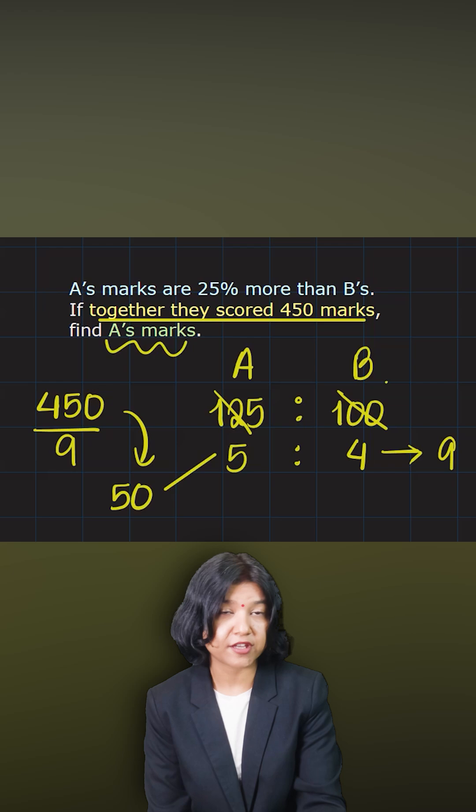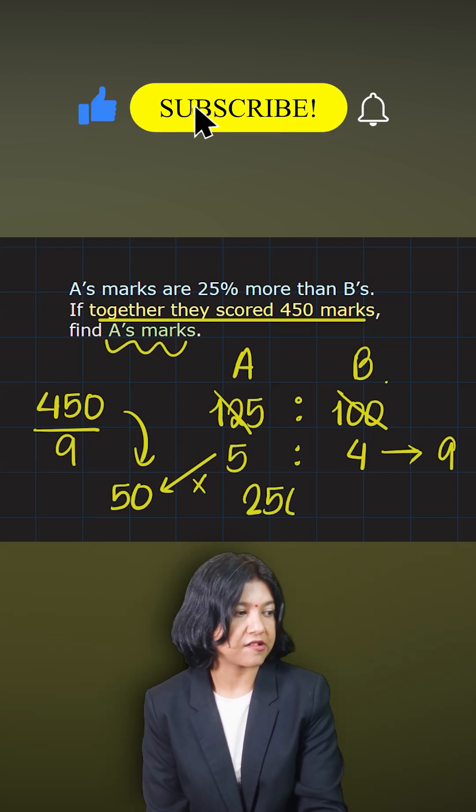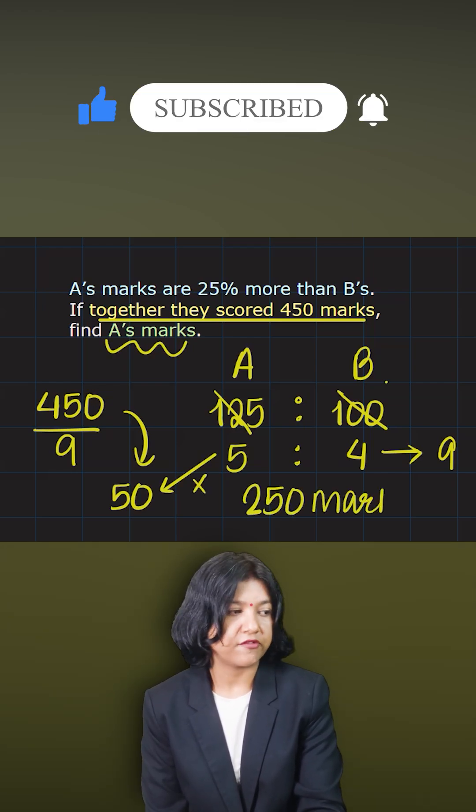You want to find A's marks. A, we got 5 units here. So 5 times 50. The answer is 250. So A's marks is simply 250. Very simple.